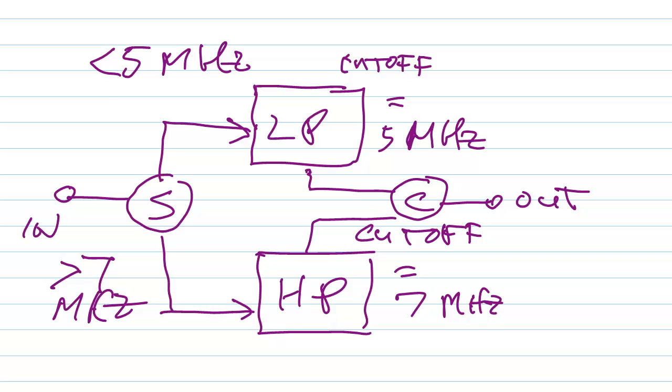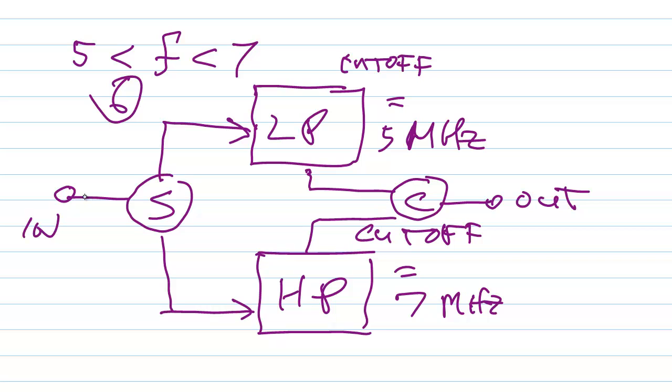Now, let's suppose that our frequency is between 5 and 7 megahertz. We'll just call our frequency F. Our frequency is greater than 5 megahertz but less than 7 megahertz. What's going to happen then? Let's just suppose it's 6 megahertz. All right, 6 megahertz signal comes in like this. The low pass filter has a cutoff of 5 megahertz. It's going to choke it off. Nothing's going to get through here.